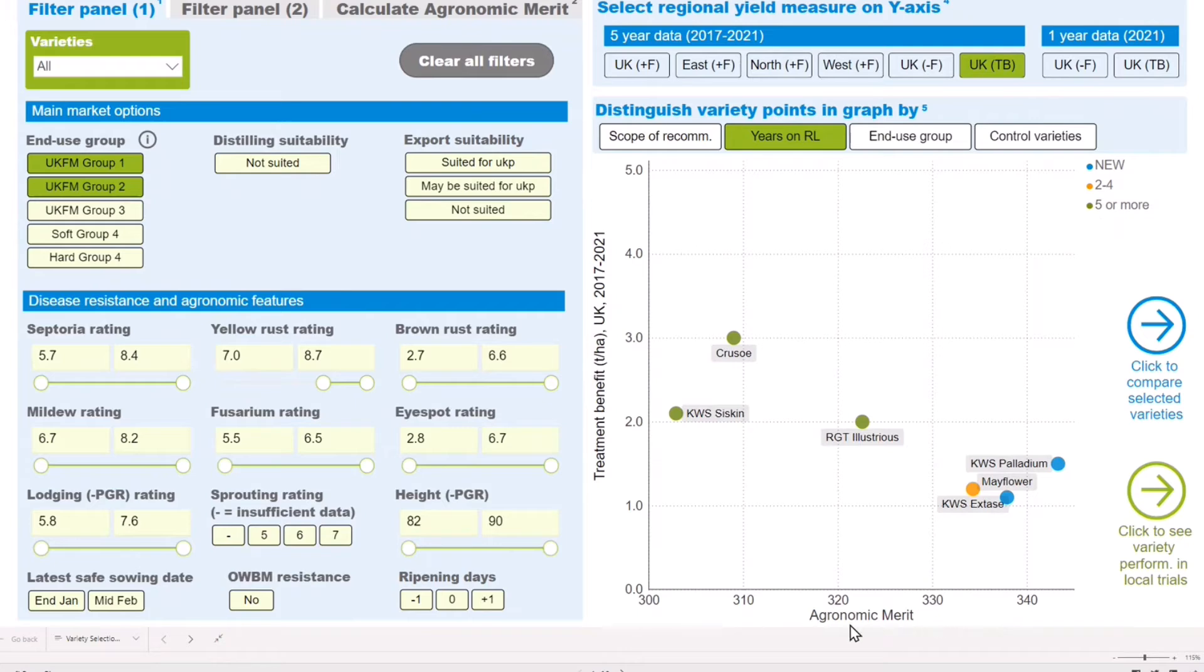The X-axis of the chart shows agronomic merit. This is a non-yield metric that aims to capture the genetic potential of varieties based on resistance to disease and lodging.